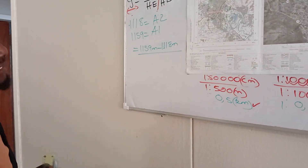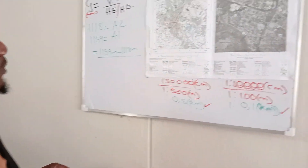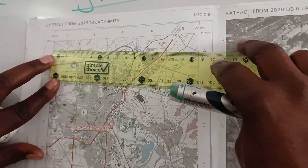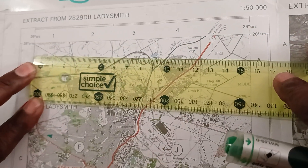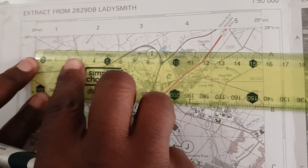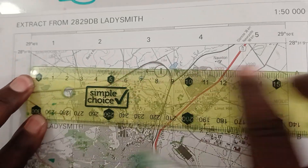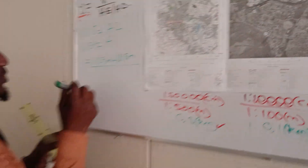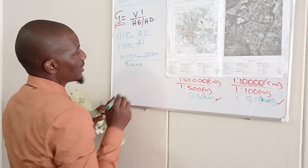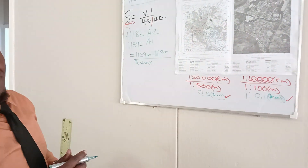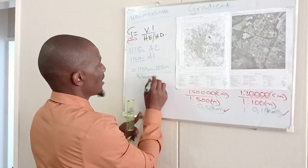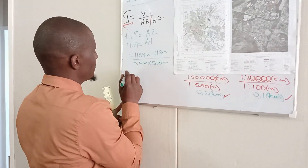I'm going to calculate the distance the same way. So, I'm going to consider the distance between spot height 1,159 and spot height 1,118 in block A2. From the map, it's somewhere around 3.4 centimeters. So I'm going to say 3.4 centimeters. I'm using 500 meters as the scale, so I'll calculate with 500 meters.